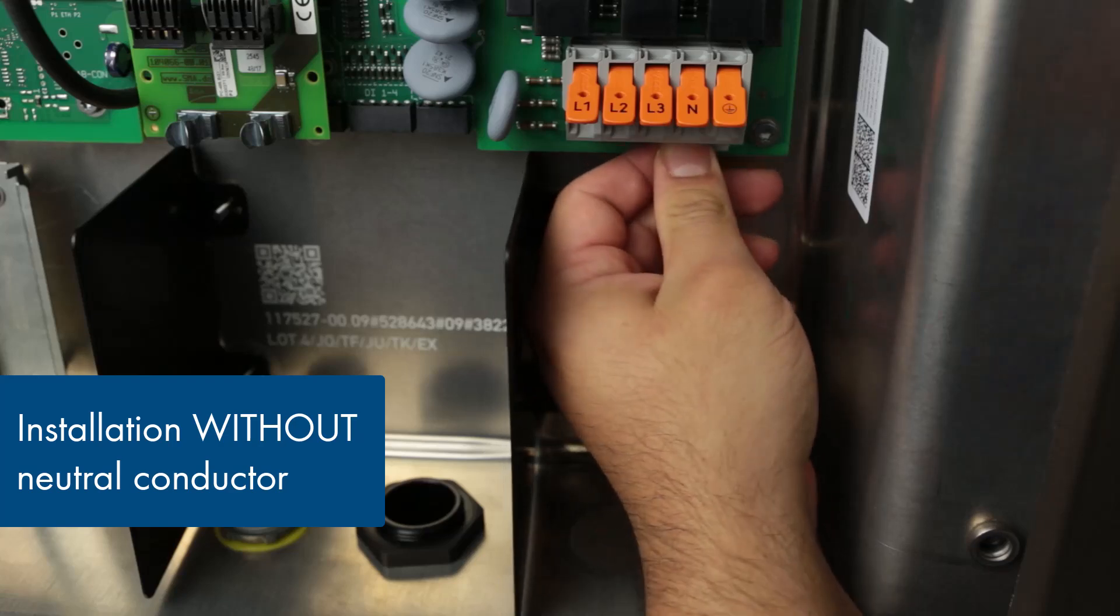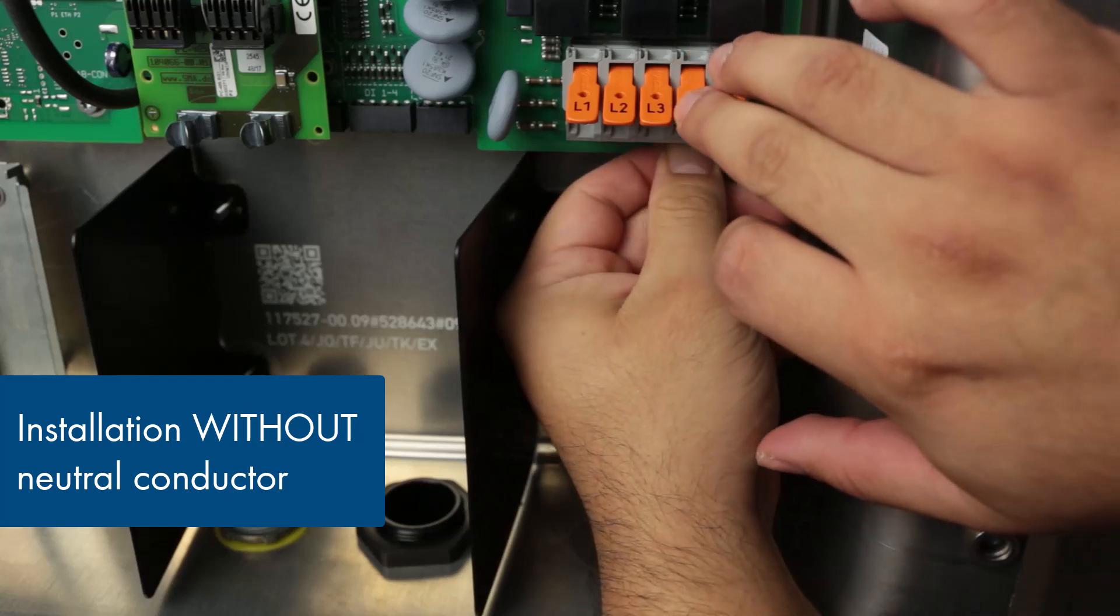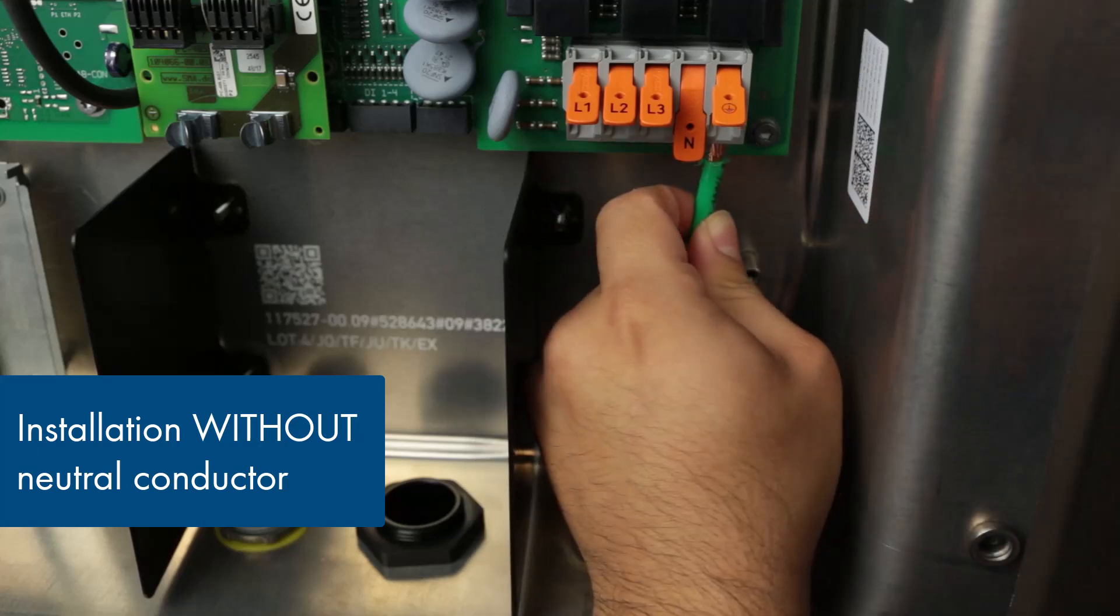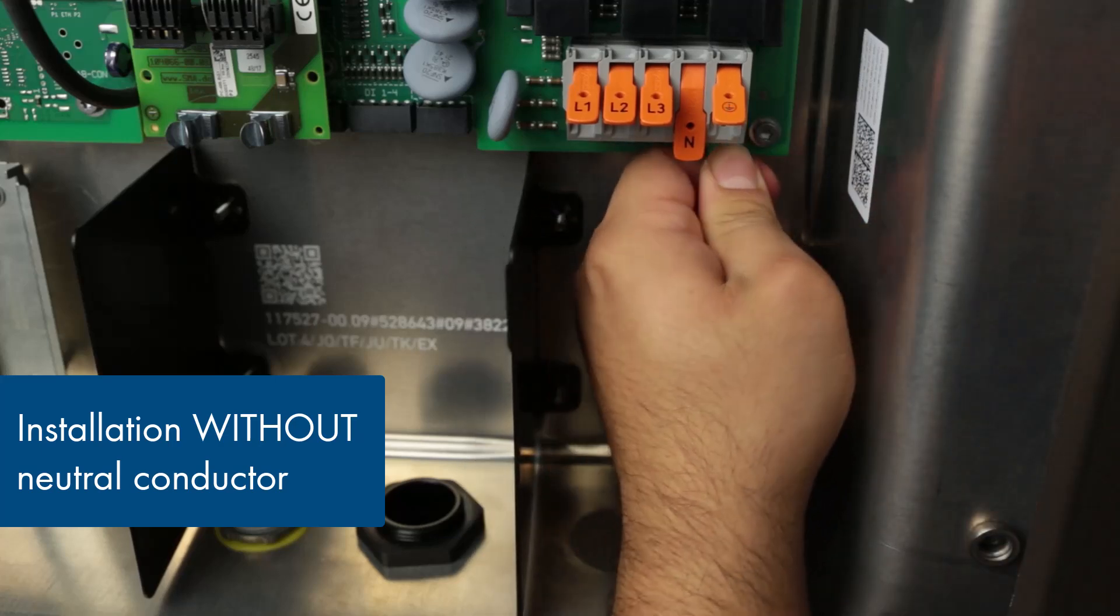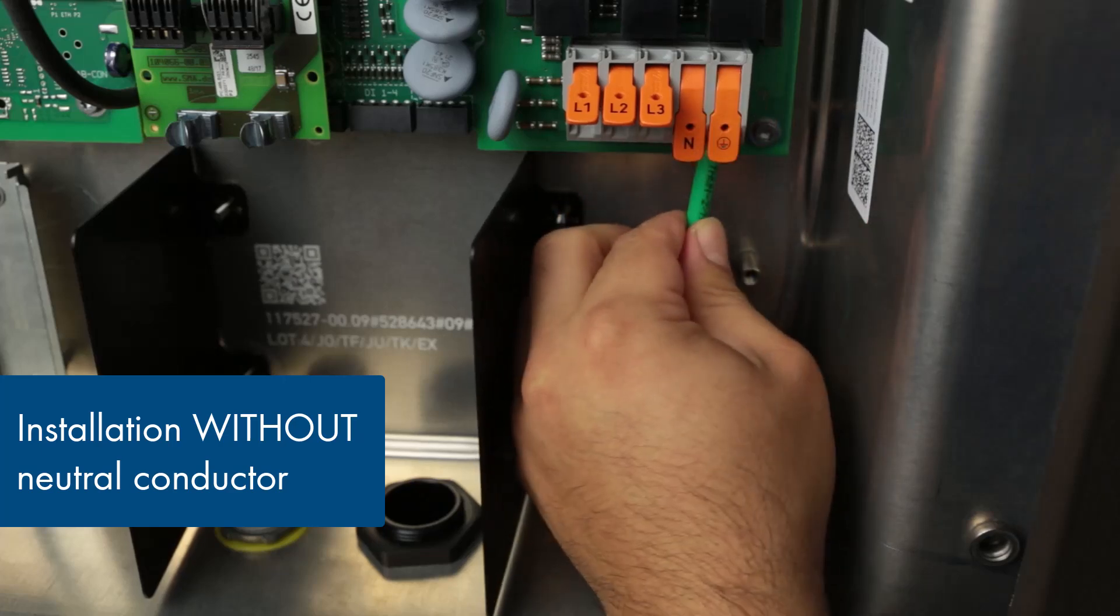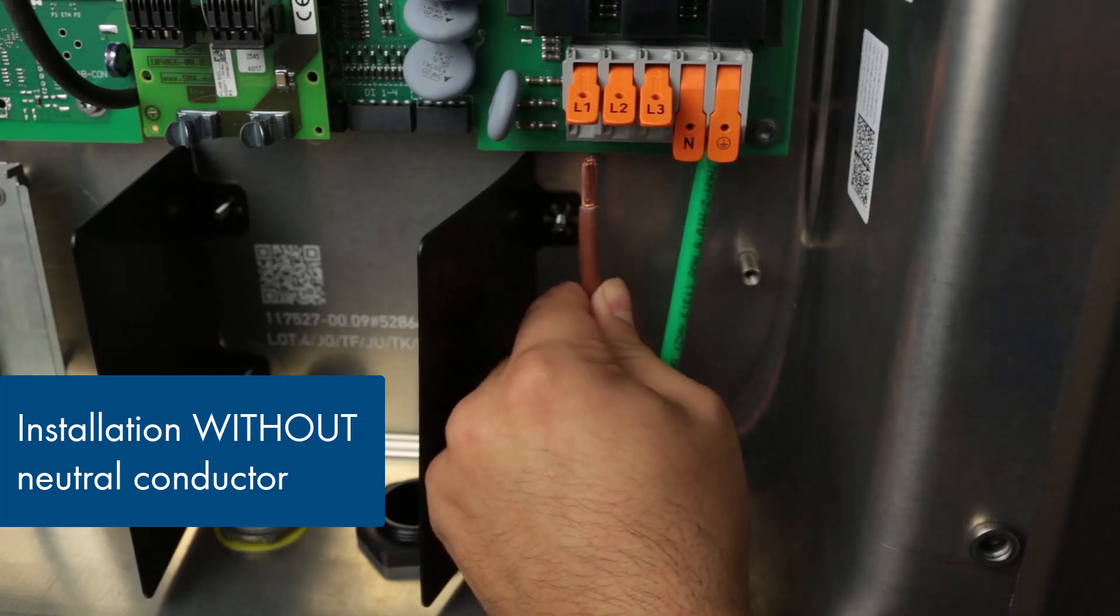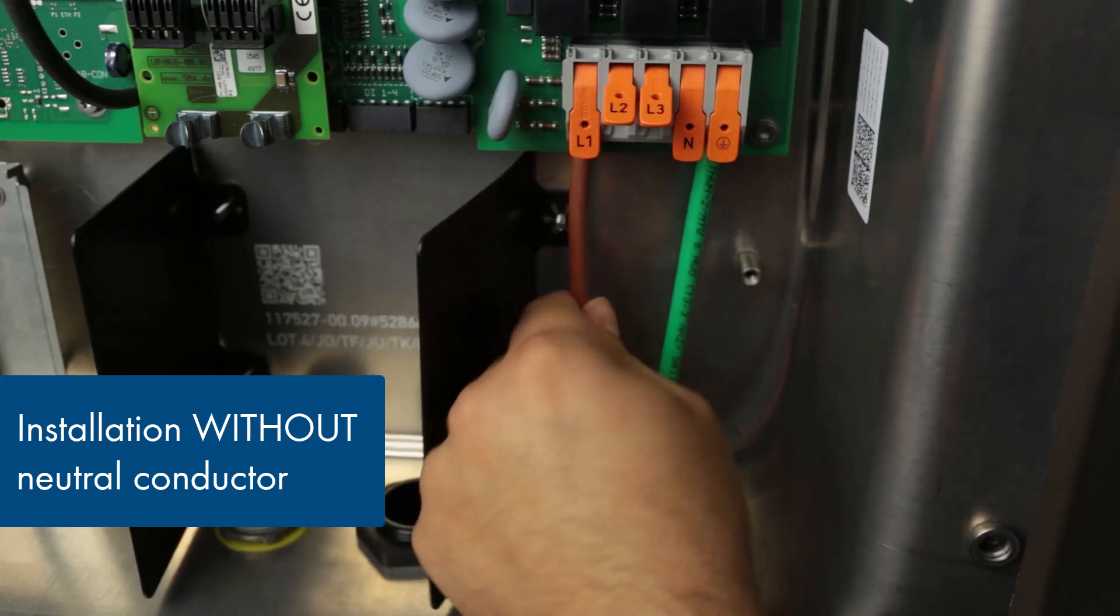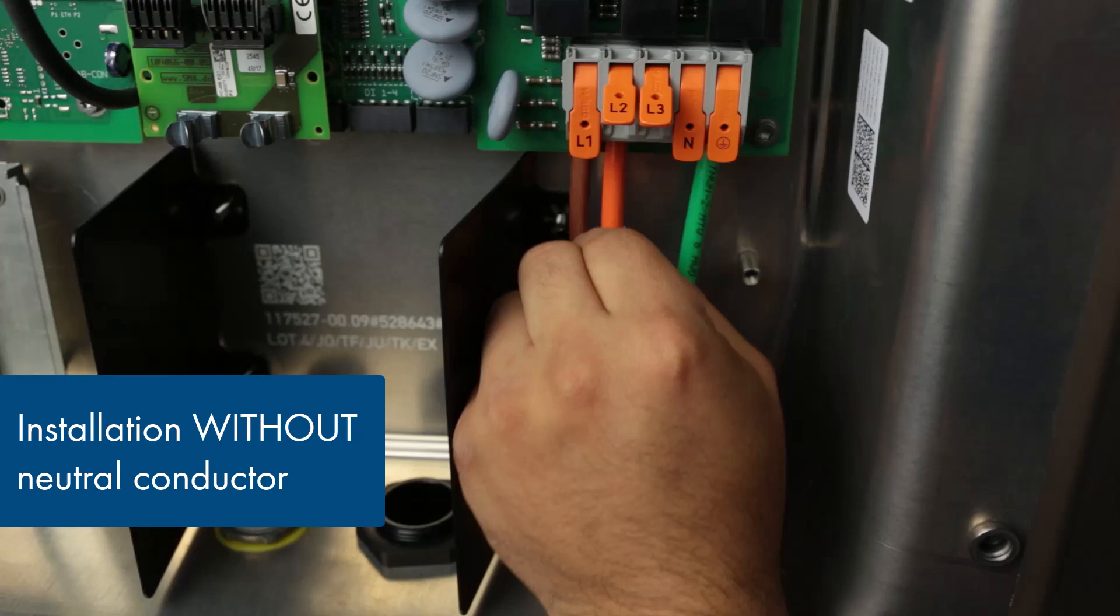Lift both the neutral and ground levers, insert the jumper, and close the neutral lever. Insert the ground conductor into the terminal marked with the ground symbol and securely close the lever. Proceed to insert the L1, L2 and L3 conductors into the respective terminals, ensuring a secure seating for each.